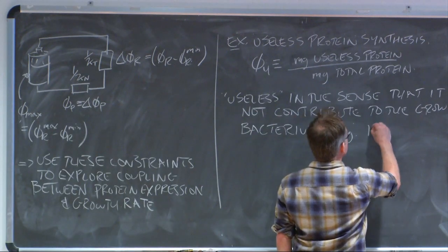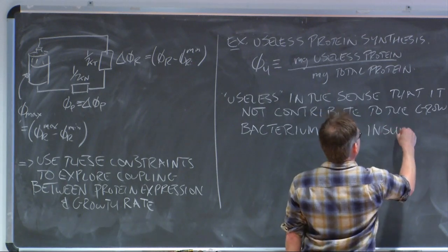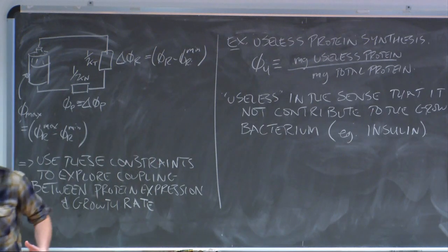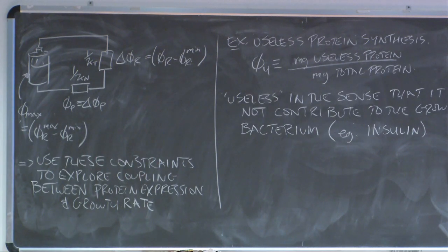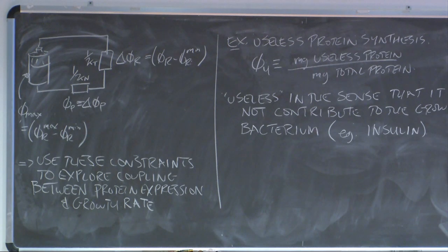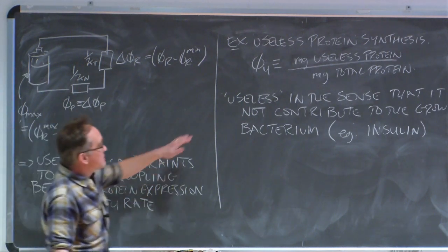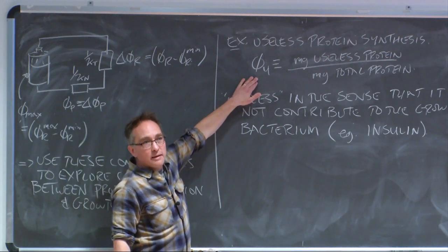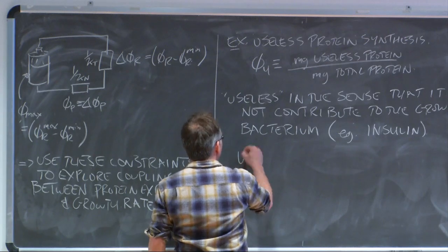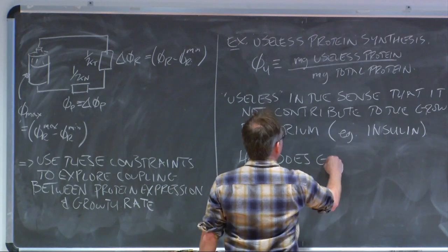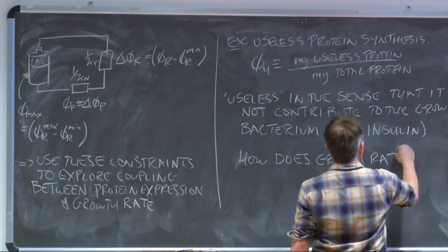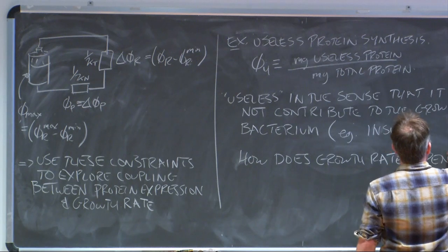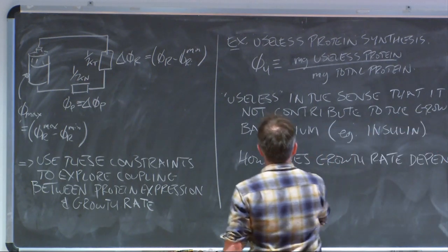The first historical example of this was people using E. coli to produce insulin, which has absolutely no purpose in a bacterium. It's just a protein made out of amino acids that doesn't help the bacterium in any way. The question is how does the growth rate depend on this fraction of useless protein phi_u — the mass fraction, milligrams of useless protein per milligrams of total protein?